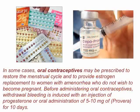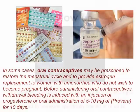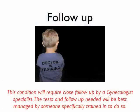In some cases, oral contraceptives may be prescribed to restore the menstrual cycle and to provide estrogen replacement to women with amenorrhea who do not wish to become pregnant. Before administering oral contraceptives, withdrawal bleeding is induced with an injection of progesterone and oral administration of Provera. This condition will require close follow-up by a gynecologist specialist, and the follow-up needed will be best managed by someone specifically trained to do so.